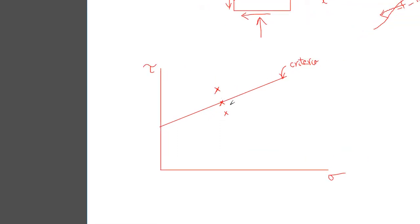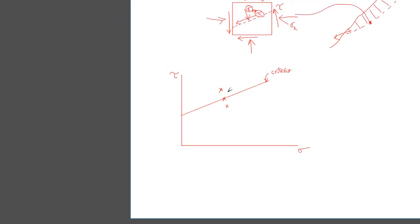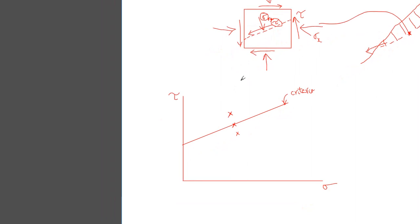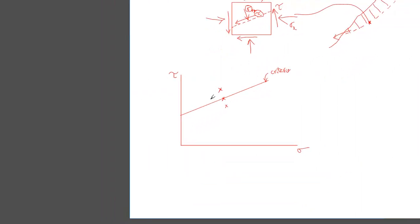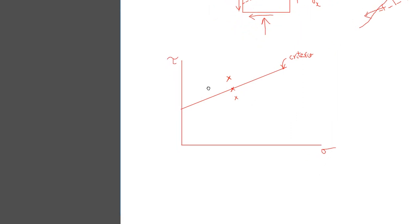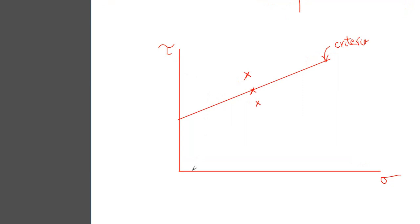But we need to utilize a Mohr Circle here to find the stresses that occur - these stresses that occur which caused the failure - and what the orientation is. So what I can do is, since I already have sigma as my x-axis and tau as my y-axis, I can simply just draw my Mohr Circle in this plot.